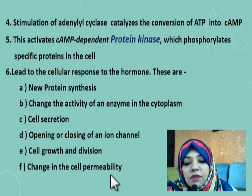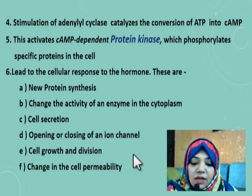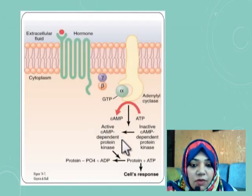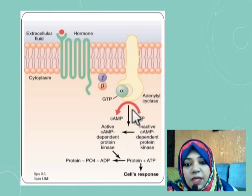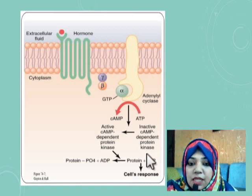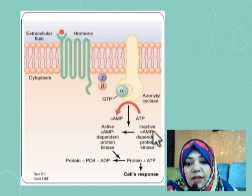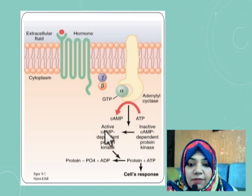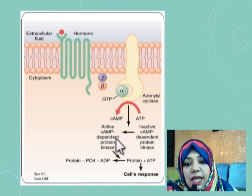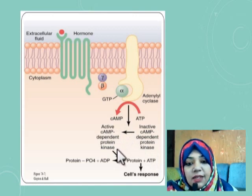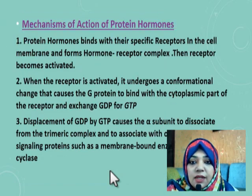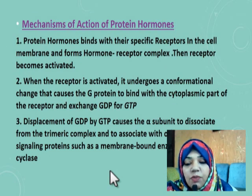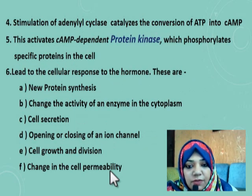To summarize the diagram: adenylyl cyclase catalyzes the conversion of ATP to cyclic AMP. Then the inactive, cyclic AMP dependent protein kinase becomes active when cyclic AMP is present, and this active protein kinase catalyzes the phosphorylation of other proteins, ultimately leading to cellular response. For written exams, you need to write these six steps and provide this diagram.